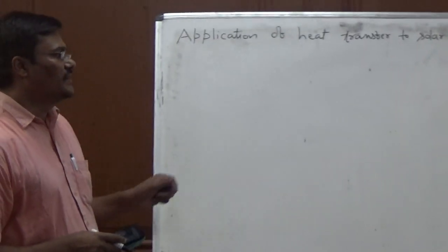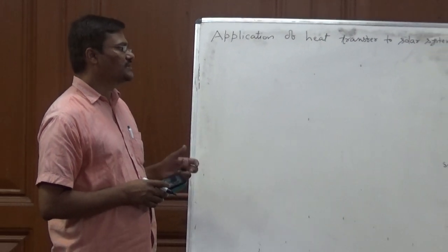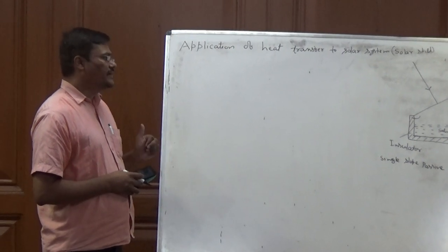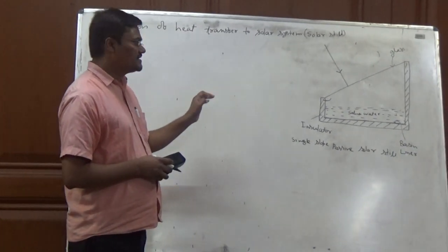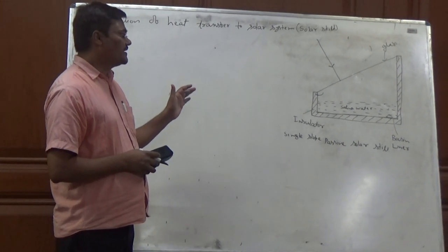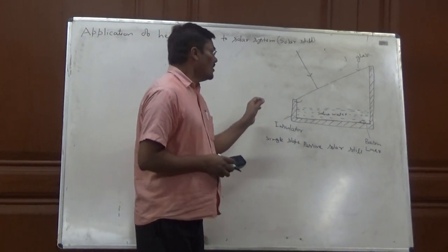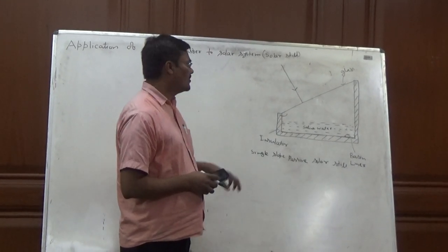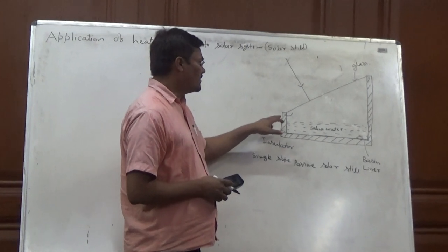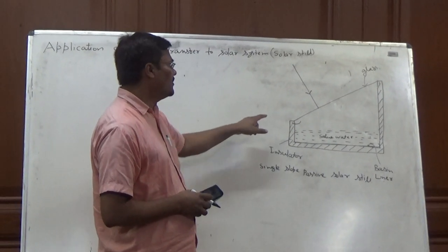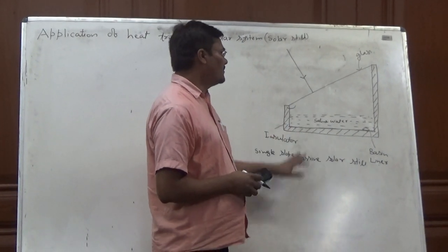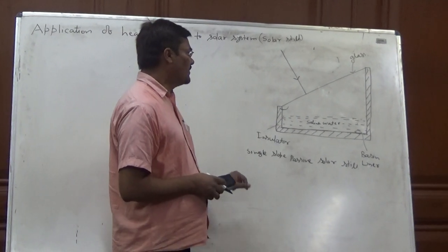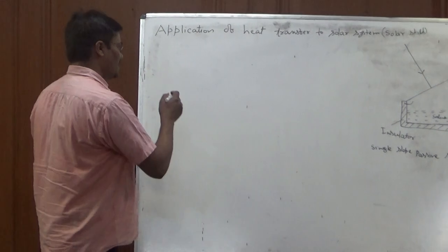So today I am going to discuss thermal modeling, how to do thermal modeling for solar system, that is the application of heat transfer. So for thermal modeling, we have certain assumptions. Why do we go for the assumptions? To simplify the cases. So first is that the system is in a steady state condition. The level of the water is constant. There is no leakage. Heat capacity of glass and absorbing basin materials are neglected. There is no stratification of water. These are the assumptions. So we will see the thermal modeling.